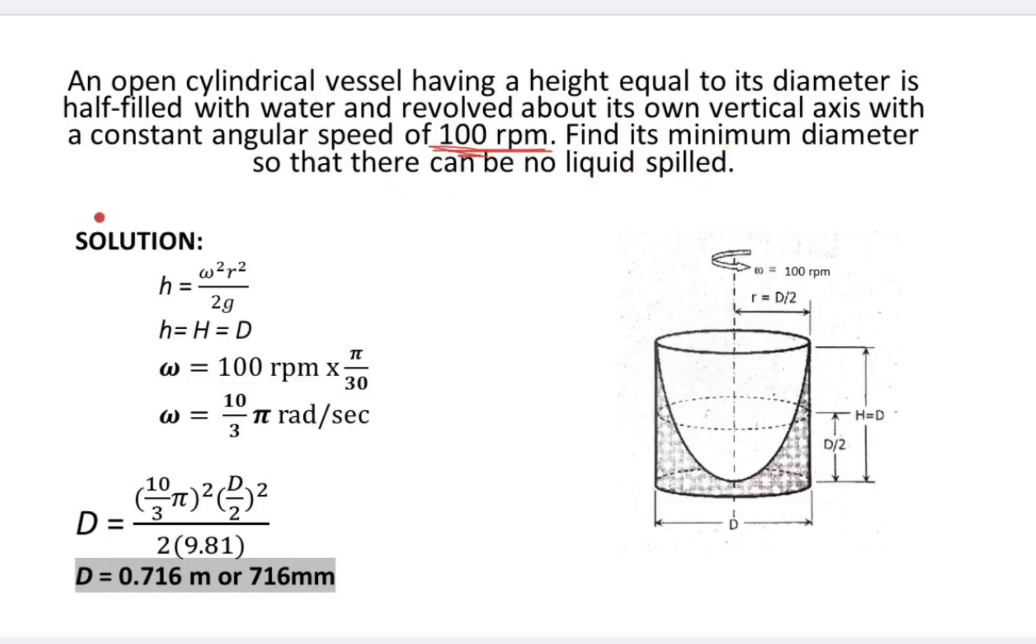Solution: Since there is no liquid spilled, the base of the paraboloid must just coincide with the upper rim of the cylinder. Since the cylinder is initially half full, the height of the paraboloid is therefore equal to the height of the cylinder. So h = ω²r²/2g, where h = H = D.